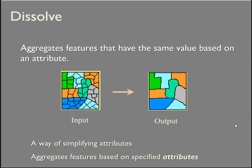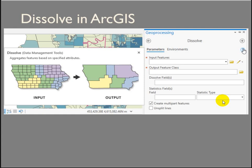Dissolving — if you run your buffer and forget to dissolve, you can either rerun your buffer and click to dissolve your outputs, or just run the dissolve tool on it. It aggregates features that share an attribute, so it's a way of simplifying your output. You do need to have an attribute that you're using as a common field.